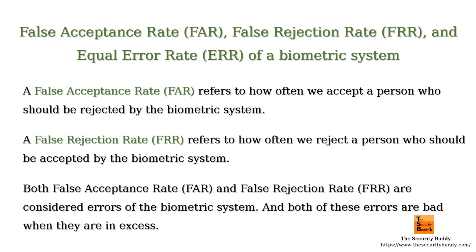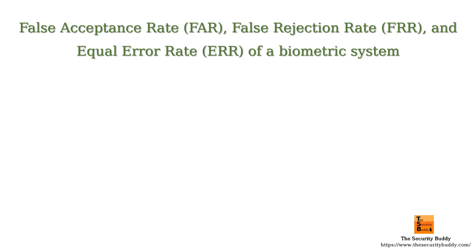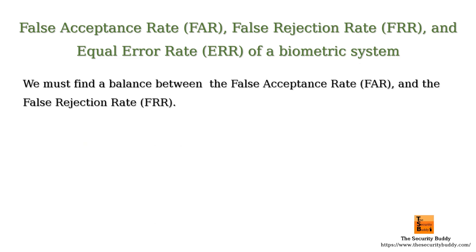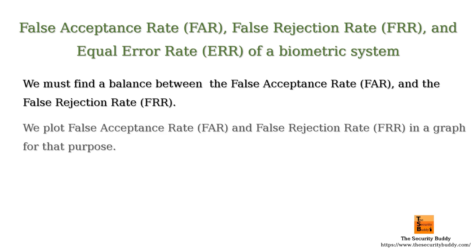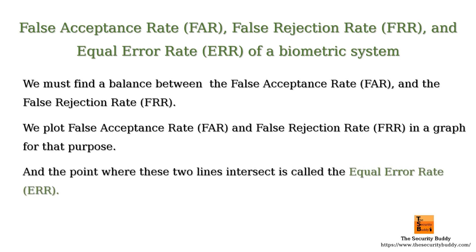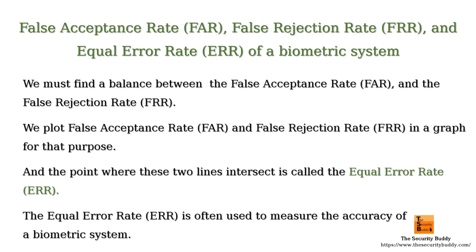Both false acceptance rate and false rejection rate are considered errors of the biometric system, and both of these errors are bad when they are in excess. So we must find a balance between these two error types. We plot false acceptance rate and false rejection rate in a graph, and the point where these two lines intersect is called the equal error rate. This equal error rate is often used to measure the accuracy of a biometric system.